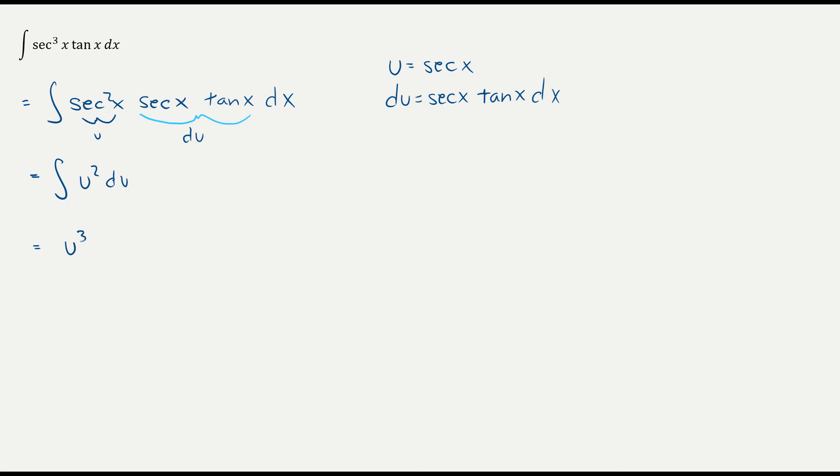All right, so that's just a power rule. u cubed over 3, and that one is quick as that. Recognizing that I could peel off a secant x and substitute in u for secant x.